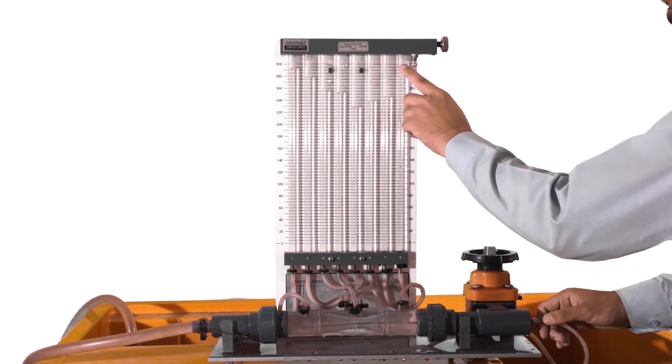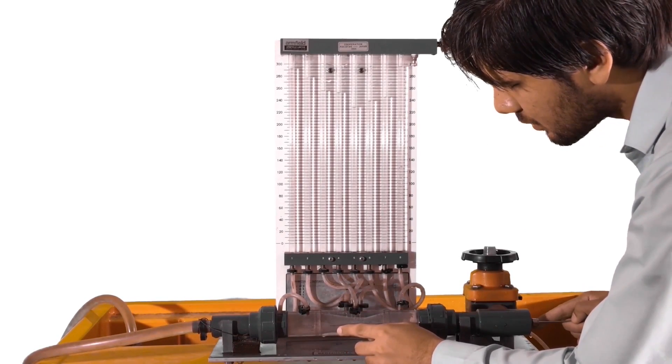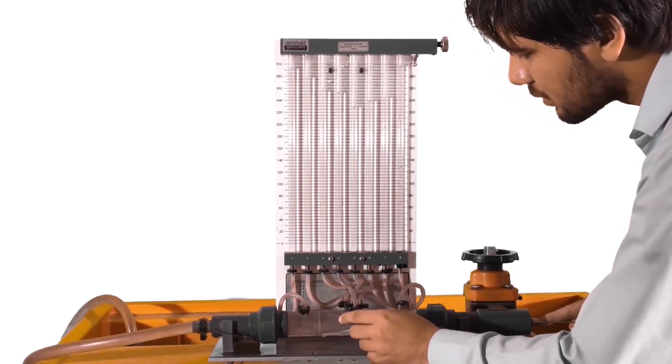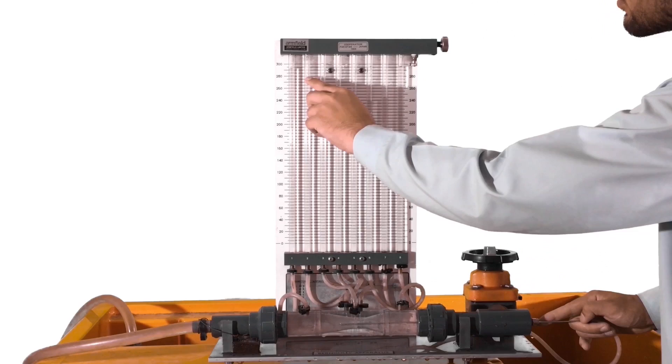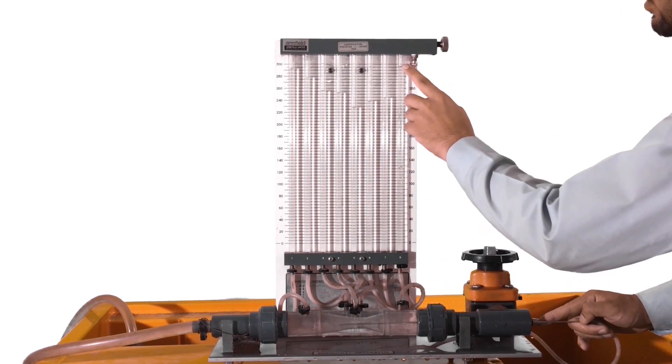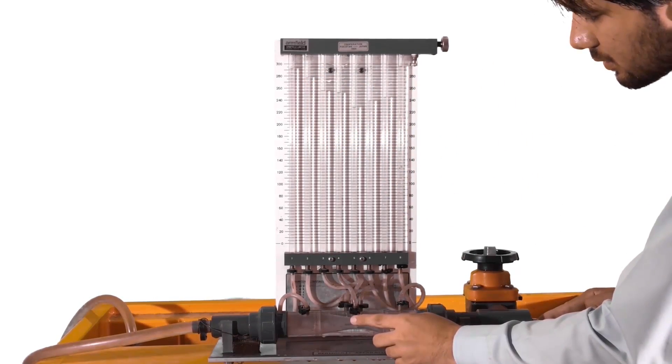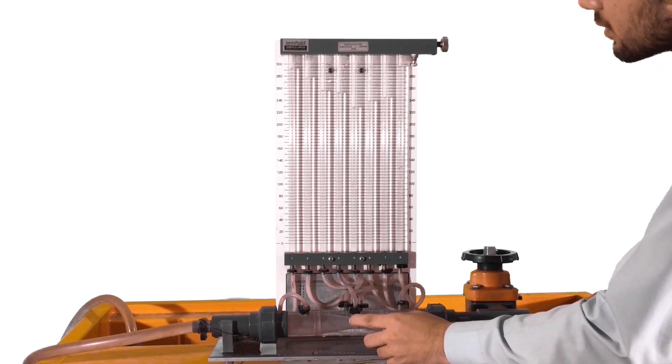You can check our group member who is pointing at each tapping point and their respective manometers, at the same time pointing out the eighth manometer tube where it shows us the total head, the actual total head at each tapping point.